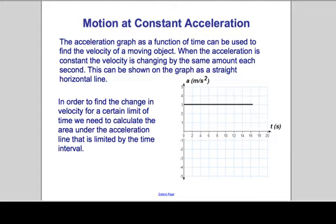The acceleration graph as a function of time can be used to find the velocity of a moving object. When acceleration is constant, the velocity is changing by the same amount each second. And this can be shown by a straight and horizontal graph. In order to find the change in velocity for a certain limit of time, we need to calculate the area under the curve.